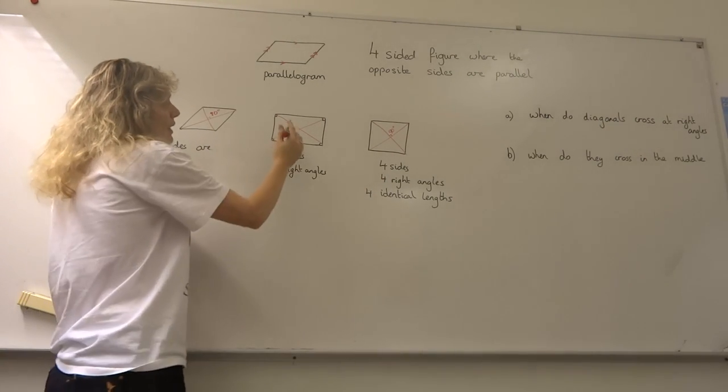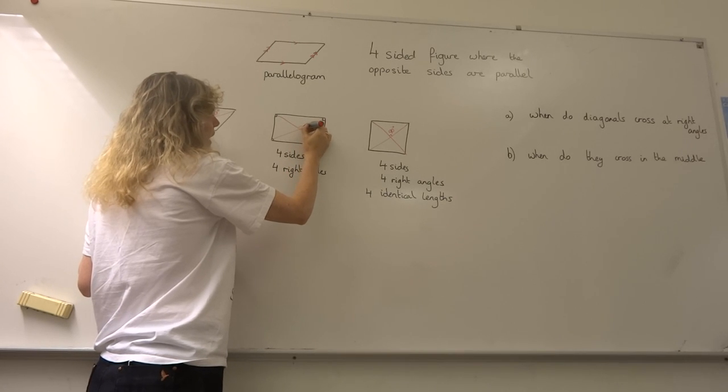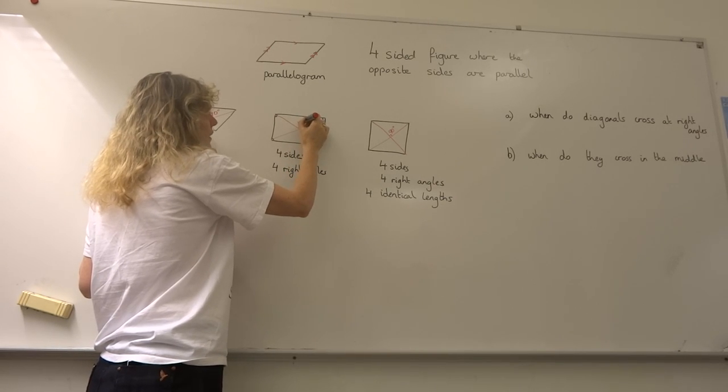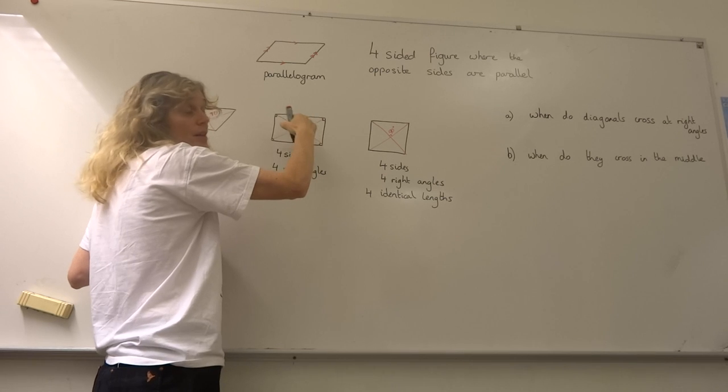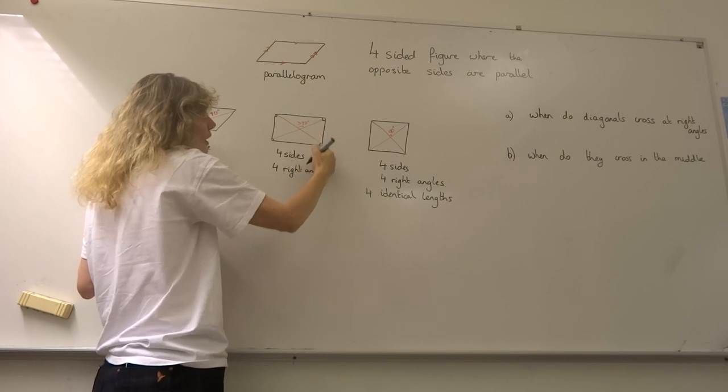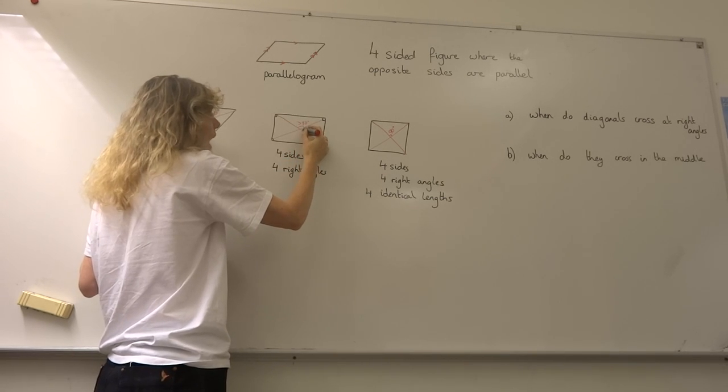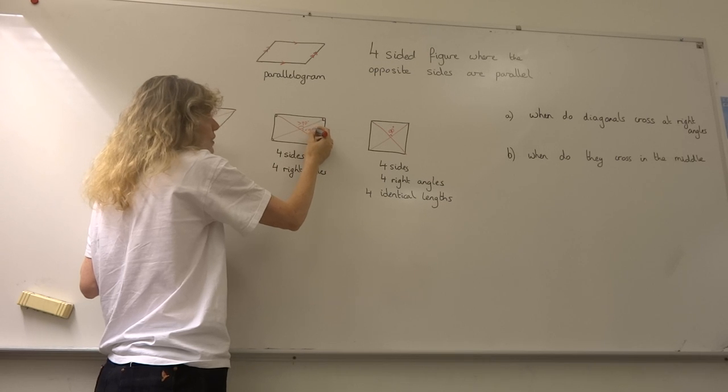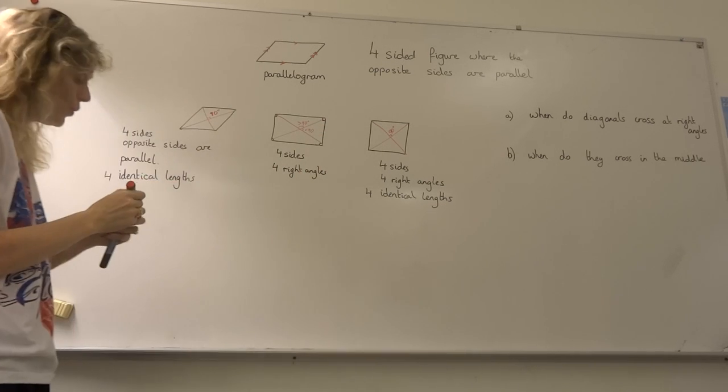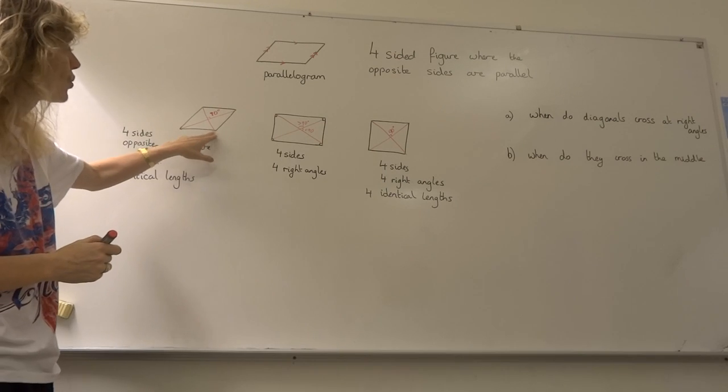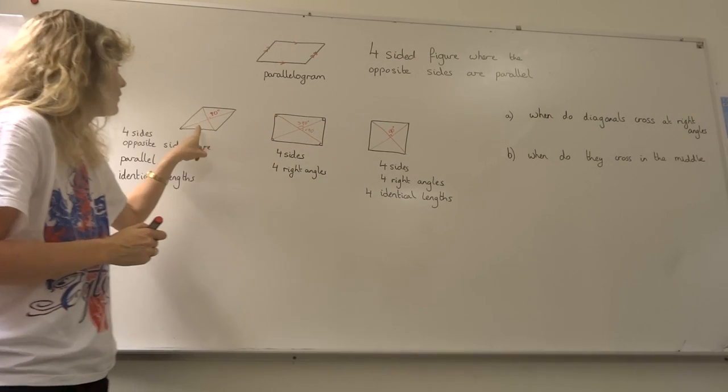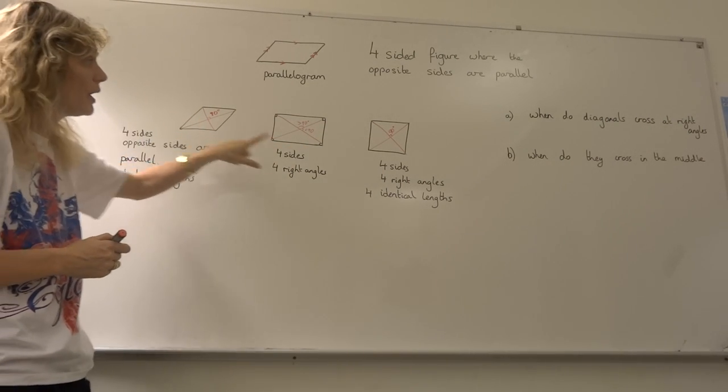But in a rectangle, this angle will be greater than 90 degrees where the length is longer, and where the side is shorter the angle will be less than 90 degrees. So there are only two of our shapes where the diagonals will cross at an angle of 90 degrees—our rhombus and our square.